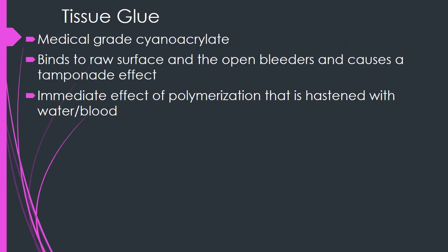Super glue is cyanoacrylate, and the tissue glue used in surgery is medical-grade cyanoacrylate. It binds to the raw surfaces of open bleeders and causes a tamponade effect by completely occluding the blood vessel. It acts immediately once it polymerizes, and this polymerization is faster in the presence of water and blood.